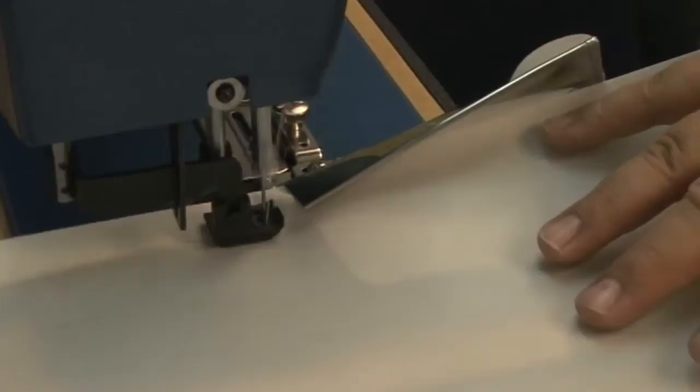So here we are showing a 2 inch Dacron tape and we're using a zig-zag to sew this on the edge of a raw sail. No more hemming for those of you that are doing sails in mass production.